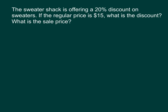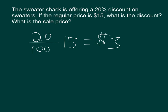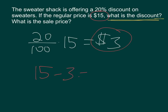These are just like the worksheet questions. So, how do we figure out what 20% of $15 is? Take 20%, multiply it by $15, we get $3. That is the amount of the discount. If I started with $15 and I saved $3, 15 minus $3 is $12, and that is the sale price.